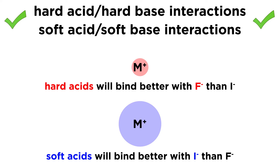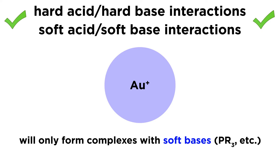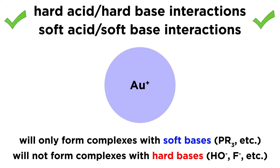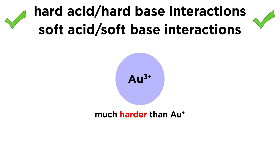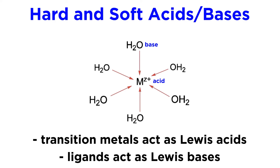This phenomenon can help us understand and predict the types of complexes a metal center will form. Take a very soft acid, like gold 1+. This will only form stable complexes with soft bases, like phosphines and similar ligands, and not those from the n=2 shell. However, gold 3+ has a greater charge density than gold 1+, and is thus a much harder acid, which means it is capable of interacting with harder bases like water and amines.